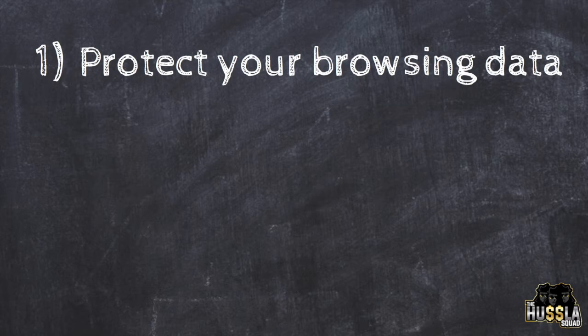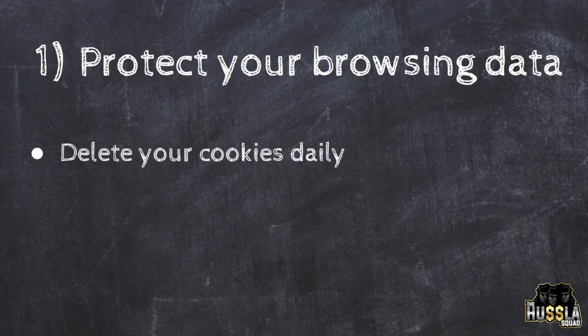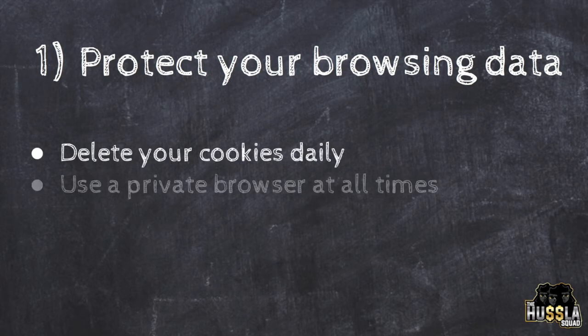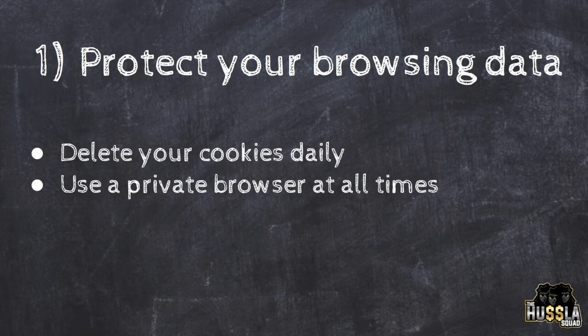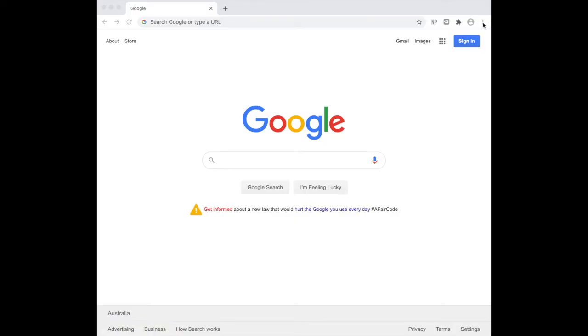The first rule is protecting your browsing data. What that means is you're going to delete your cookies daily — that's for all browsers — and use Google Chrome Incognito or Firefox on a private browser. Follow these rules at all times and don't get lazy, because they're very important. You never want to give the bookies any of your data. If they know stuff about you, that's an advantage for them. We want to have the odds in our favor, so give them nothing.